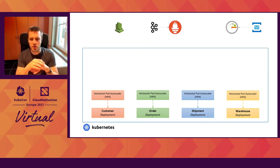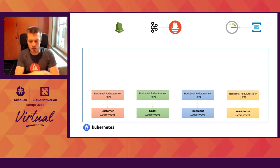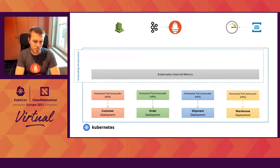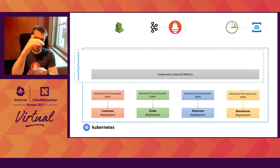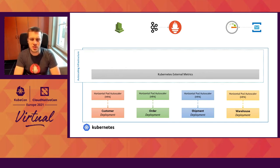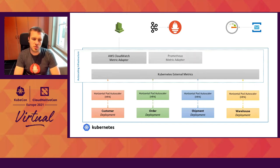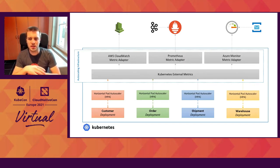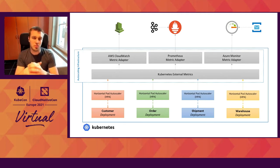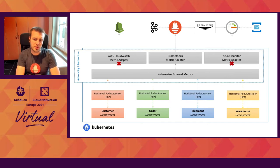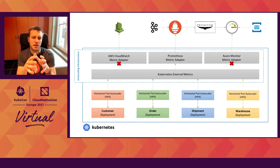Now imagine you want to scale on one or more of these external dependencies at the top of the slide. On the Kubernetes side, you would use what's called an external metric, which basically defines these metrics from outside of the cluster. Before you can use these external metrics, you would need to use a metric adapter. A metric adapter basically pulls the metric from one of those systems and makes them available for you to automatically scale on. There is a caveat, however — you can only use one metric adapter. So if you want to use multiple systems, you'll have to choose one and make sure all the metrics are available in that one tool.